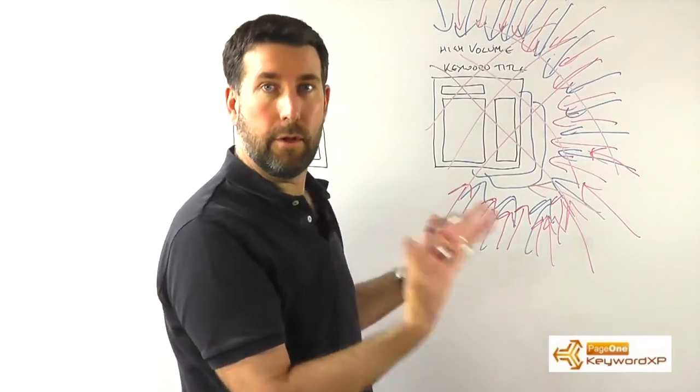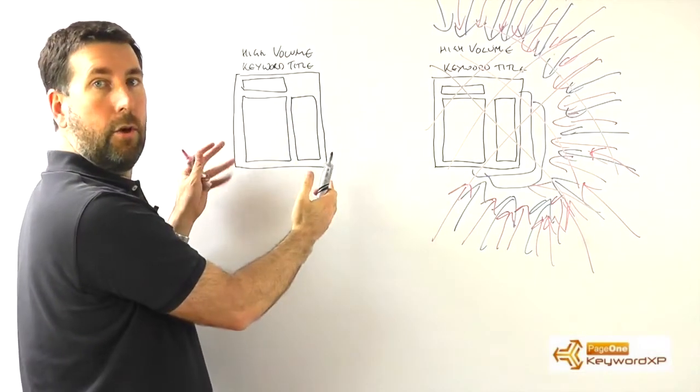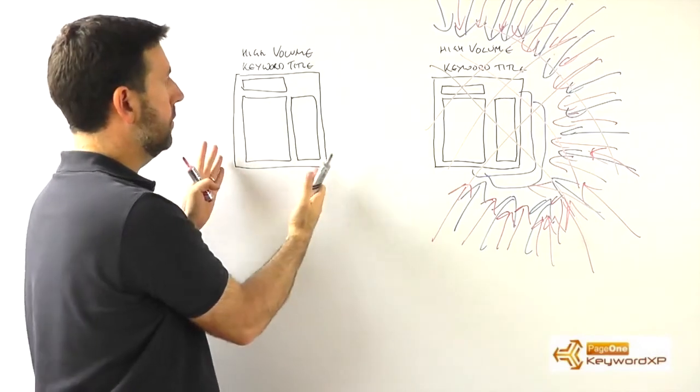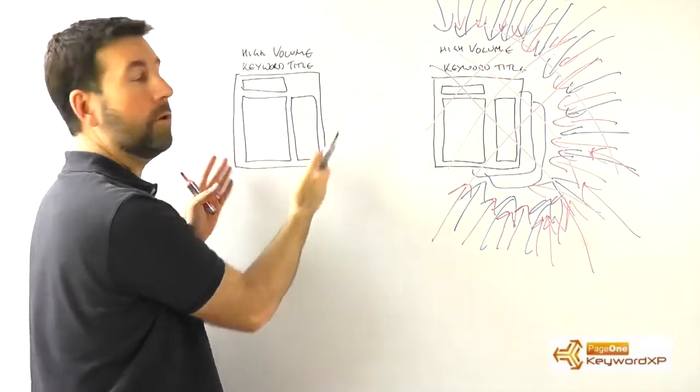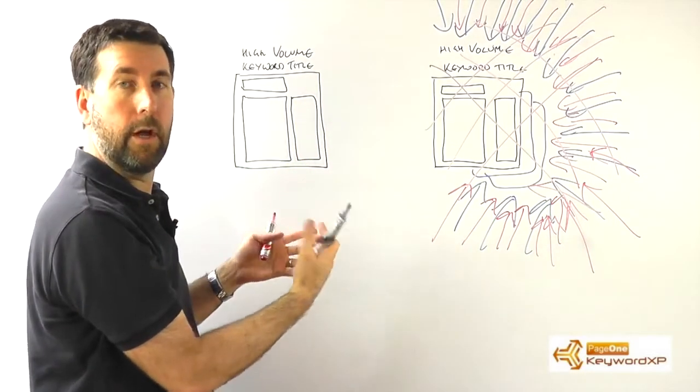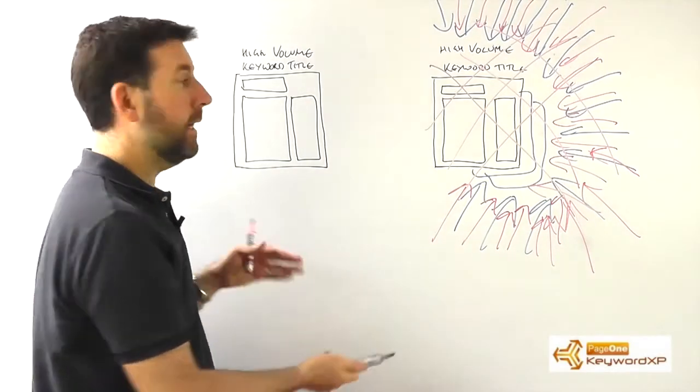So the way to do an authority site is like this. Again, you obviously have to build your main site and you orientate your homepage towards your high-volume keyword. But instead of focusing your time just on building backlinks, focus more on the content.